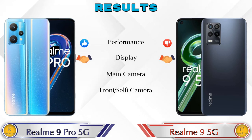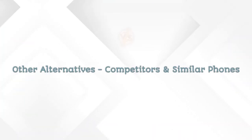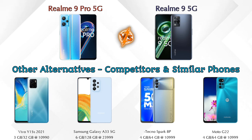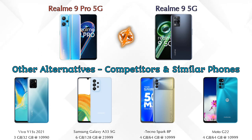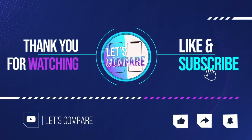For the final result, in performance the Realme 9 Pro 5G is ahead. In the rear main camera, the Realme 9 Pro 5G is also ahead. In the front selfie camera, both phones are the same. For competitors at the same price: Vivo Y15s 2021, Samsung Galaxy A33 5G, Tecno Spark 8 Pro, and Moto G22 4G — details for all these are available in the description. If you liked our video, please like and subscribe. Thanks for watching!